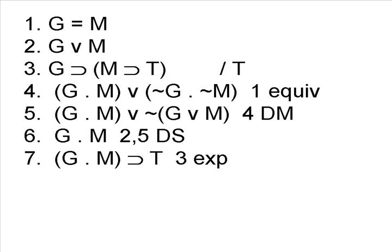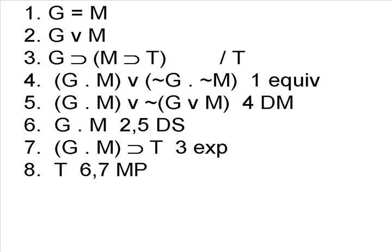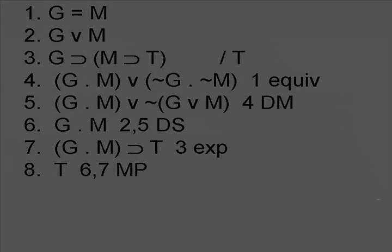At this point, we can turn line 3 into G and M implies T using the rule of exportation. We could have performed this rule earlier — it doesn't really matter. But now that we have that line, we can do a simple modus ponens to get the conclusion, which is T, thus proving the argument valid.